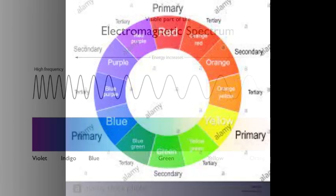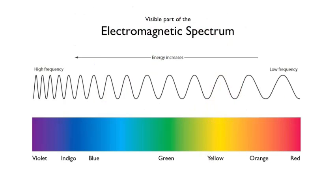In physics, color is associated specifically with electromagnetic radiation over a certain range of wavelengths visible to the human eye. Radiation of such wavelengths constitutes that portion of the electromagnetic spectrum known as the visible spectrum — in example, light.